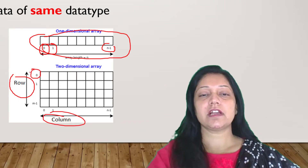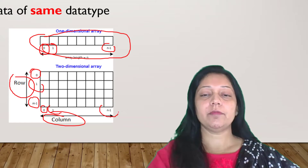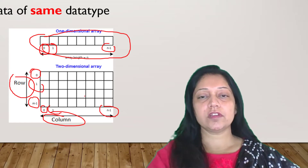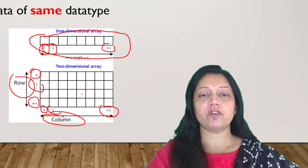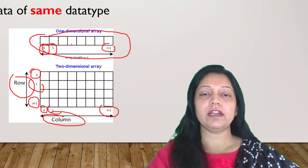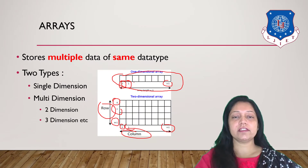In a two-dimensional array, the row numbers start with 0, 1 up to m-1, and the column numbers start with 0, 1 up to n-1. This is an m×n matrix. A two-dimensional array is in the form of a matrix, while a one-dimensional array is in a single row or single column.